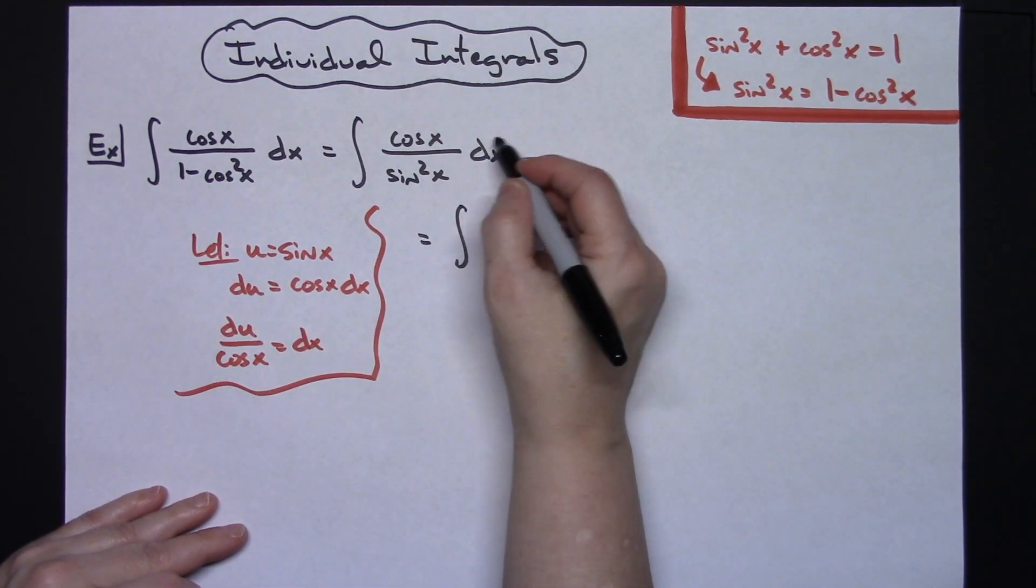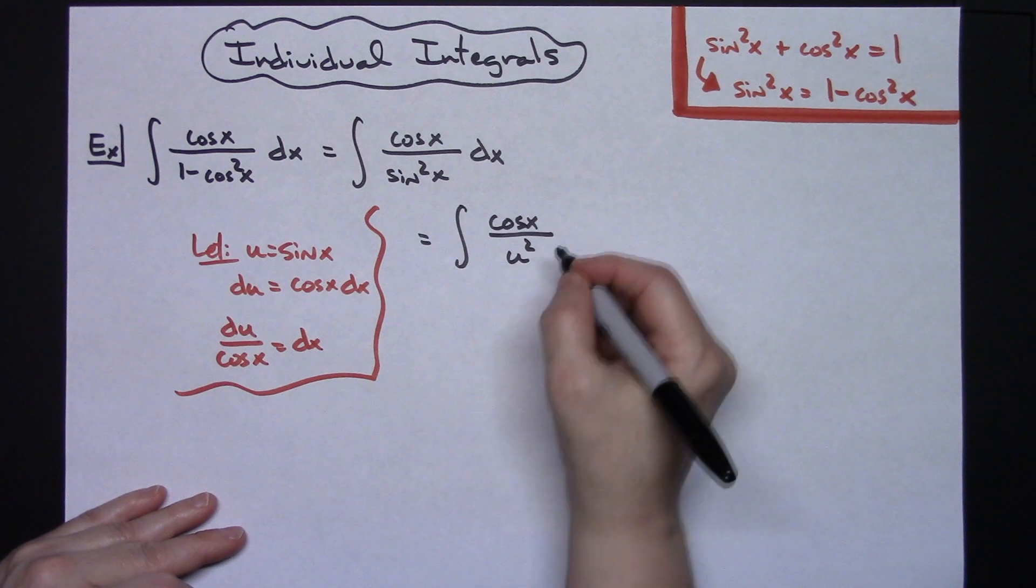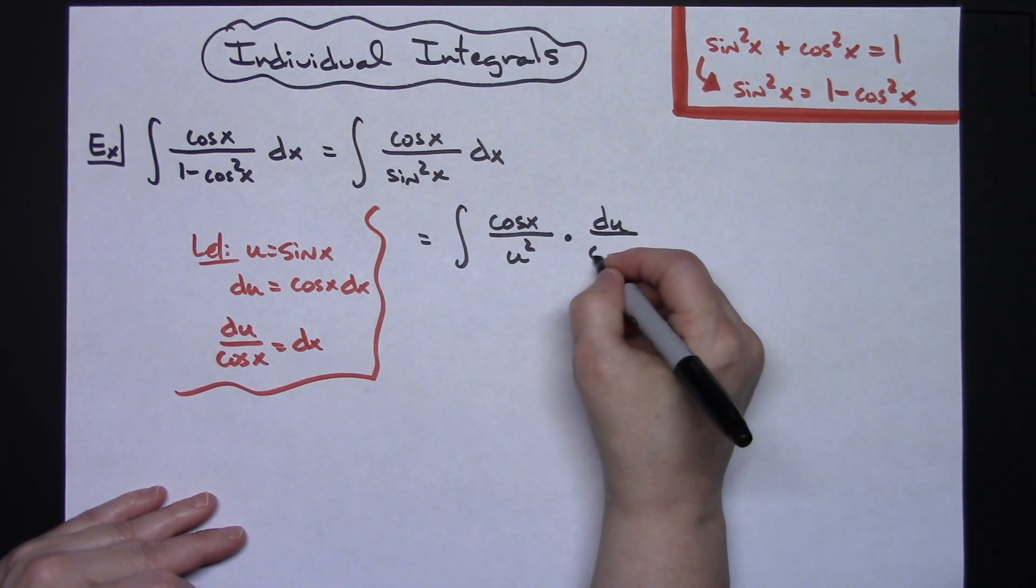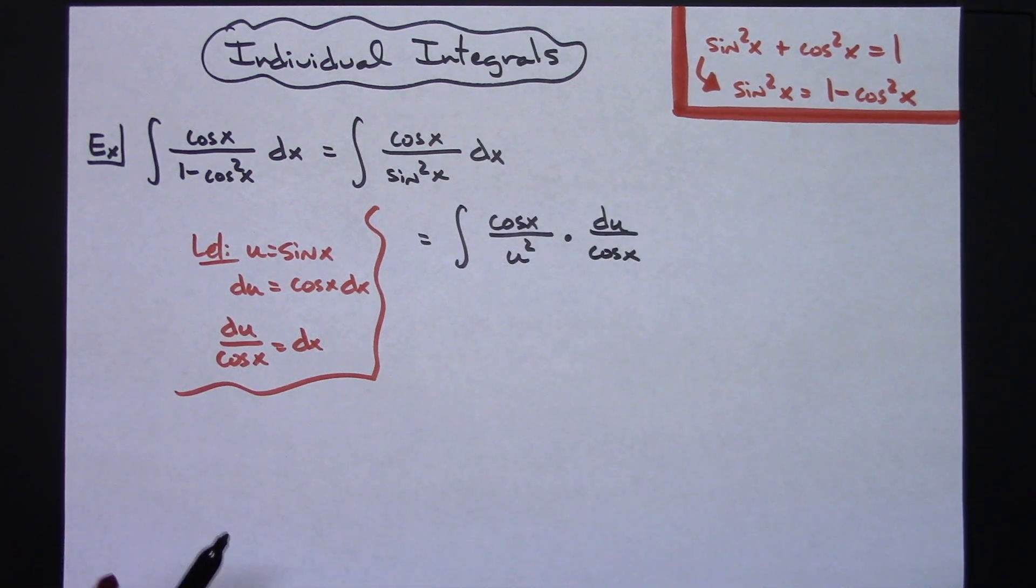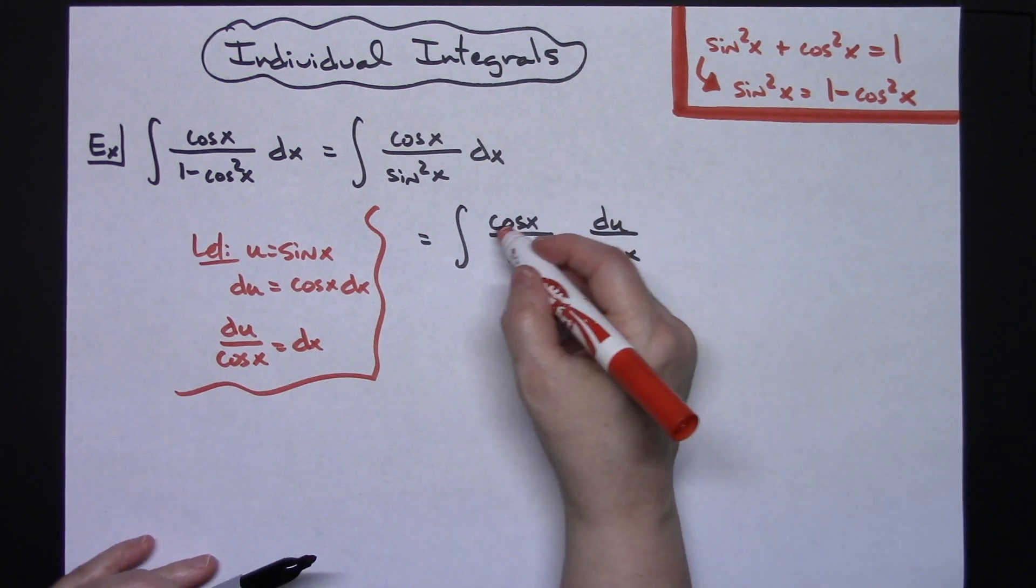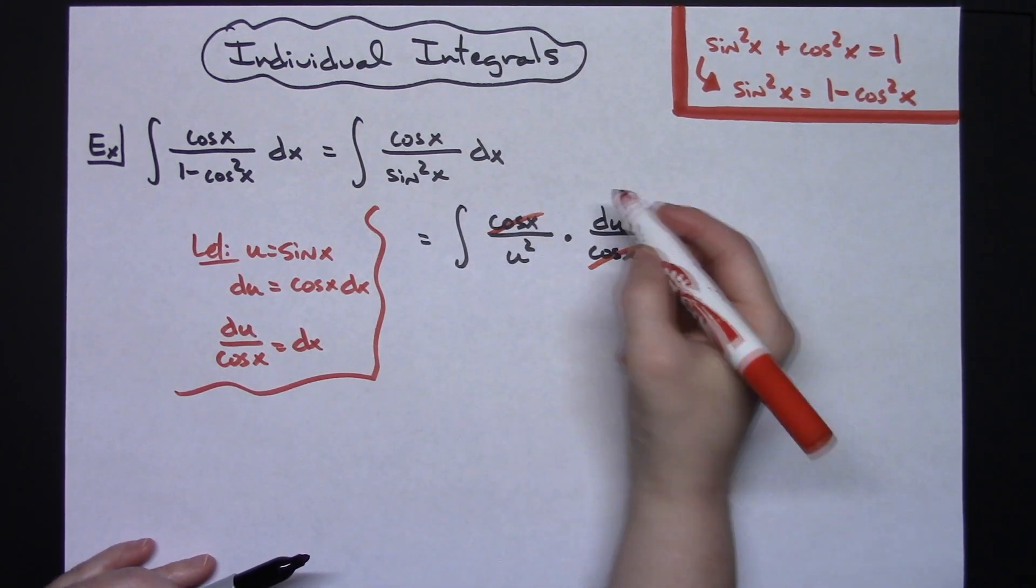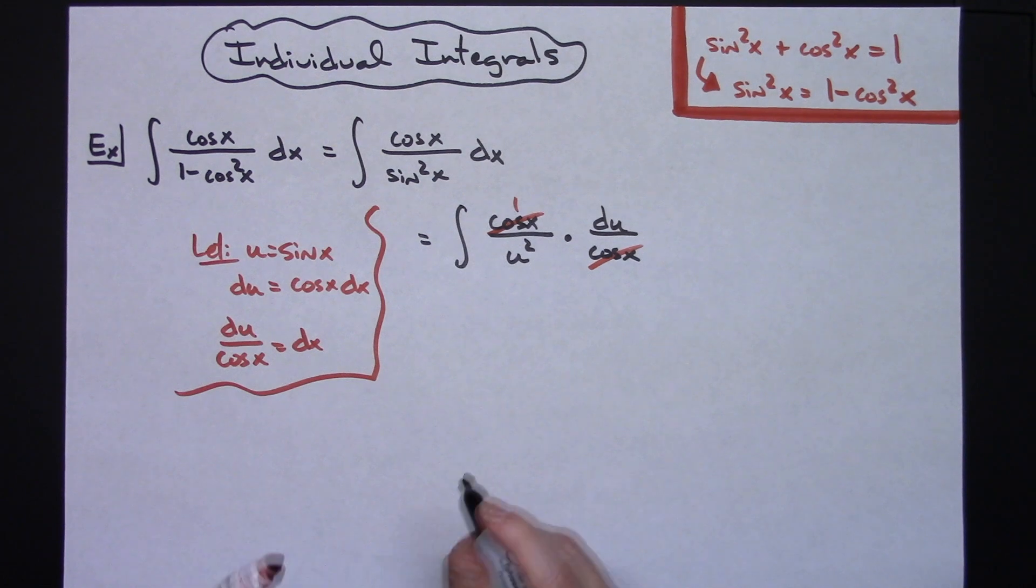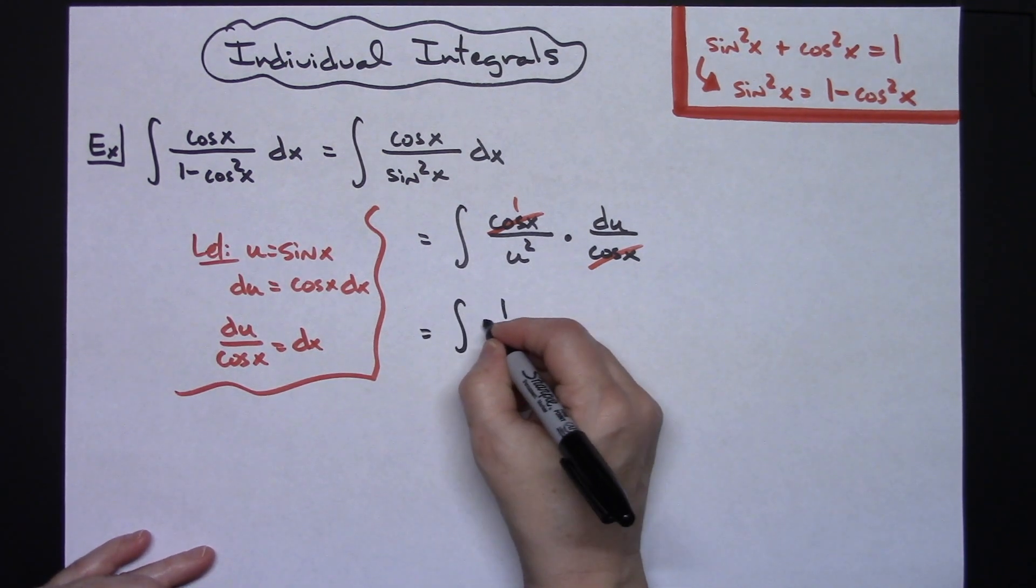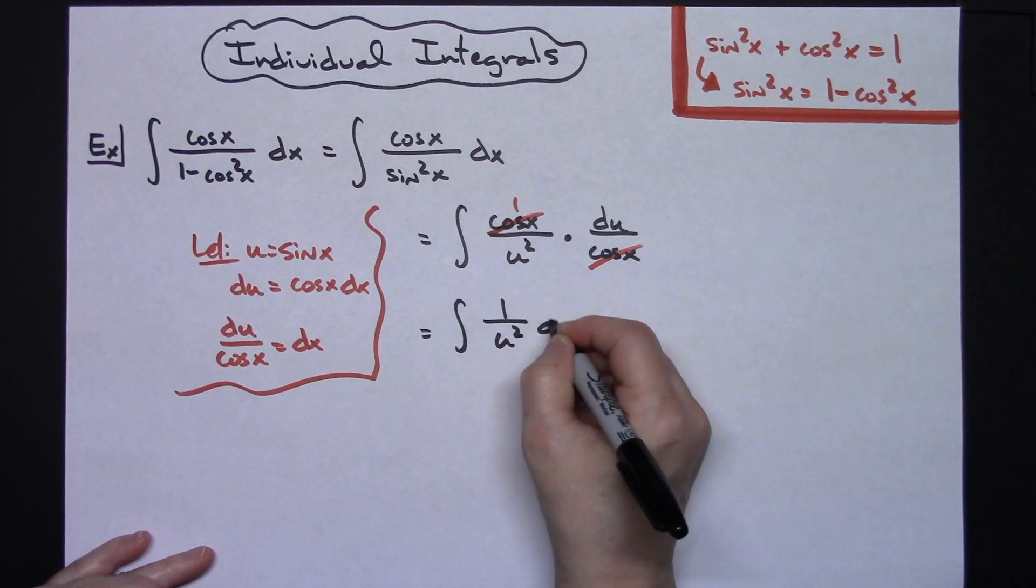That dx I'm going to replace with my du over cosine x. What that's going to allow me to do now is then cross out those cosine x's. That'll leave me with a 1 right there on the top. So I'm going to have the integral of 1 over u squared du.